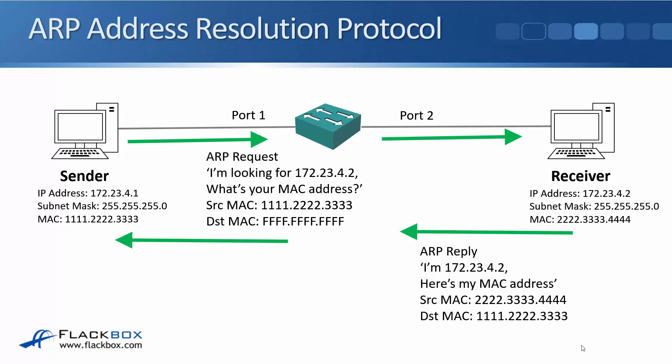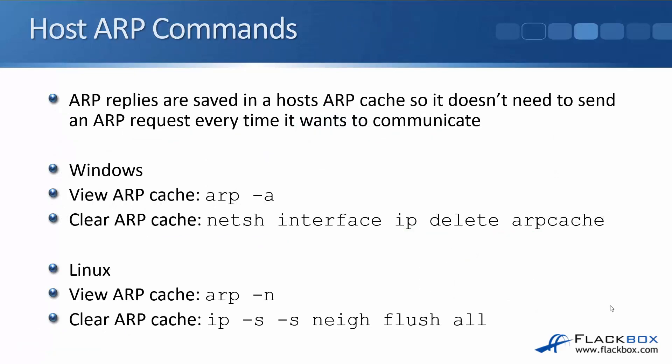That is how ARP works when both hosts are on the same IP subnet. ARP replies are saved in a host's ARP cache so that it doesn't need to send an ARP request every time it wants to communicate with somebody else. To view the ARP cache, on Windows we use the ARP -a command. On a Linux host, we use the ARP -n command. You can also use the commands shown to flush the cache if needed — we wouldn't normally do that, but if troubleshooting or if the ARP cache got corrupted, that's how we would clear it.